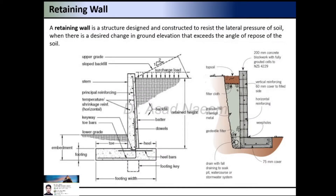A retaining wall is a structure that is designed and constructed to resist the lateral pressure of soil when there is a desired change in ground elevation that exceeds the angle of repose of soil. Retaining walls are used to hold back masses of earth, loose materials like debris, and other materials. These are used in construction of railways, highways, canals, basement walls in buildings, walls around reservoirs, abutments of bridges, and other structures where the elevation of one part differs from another.